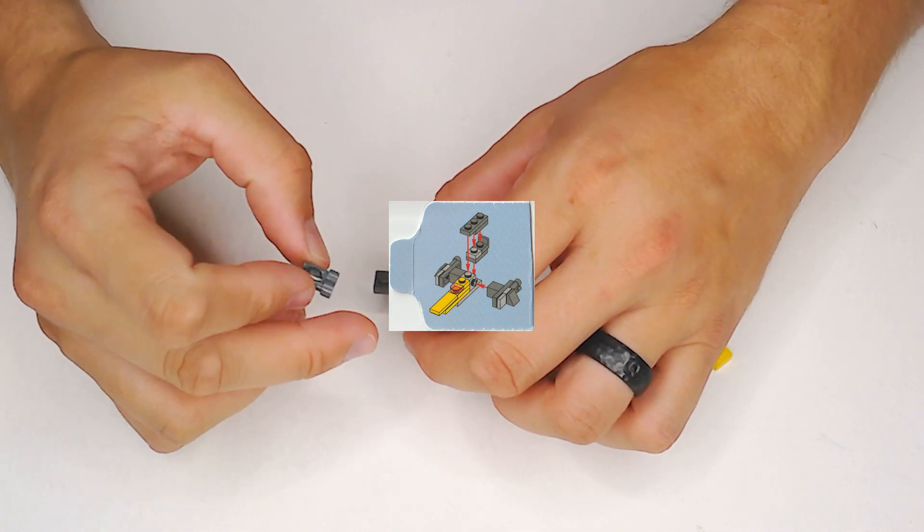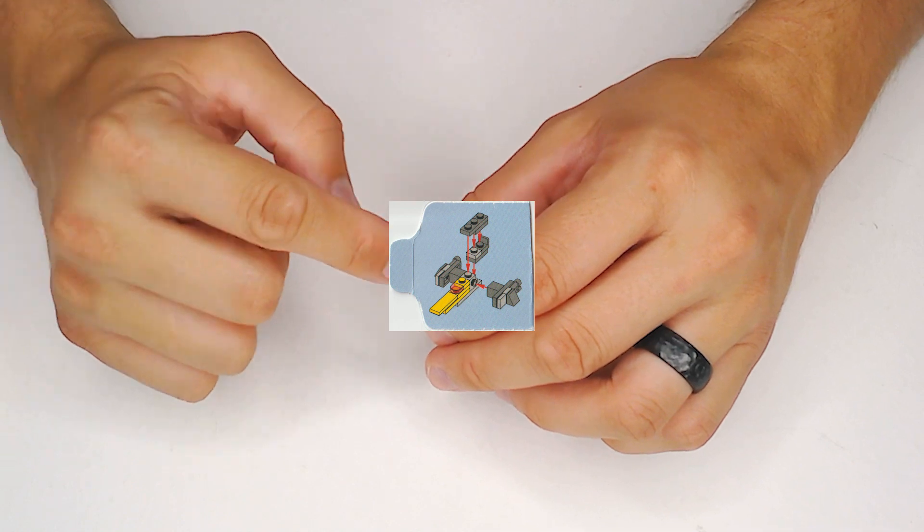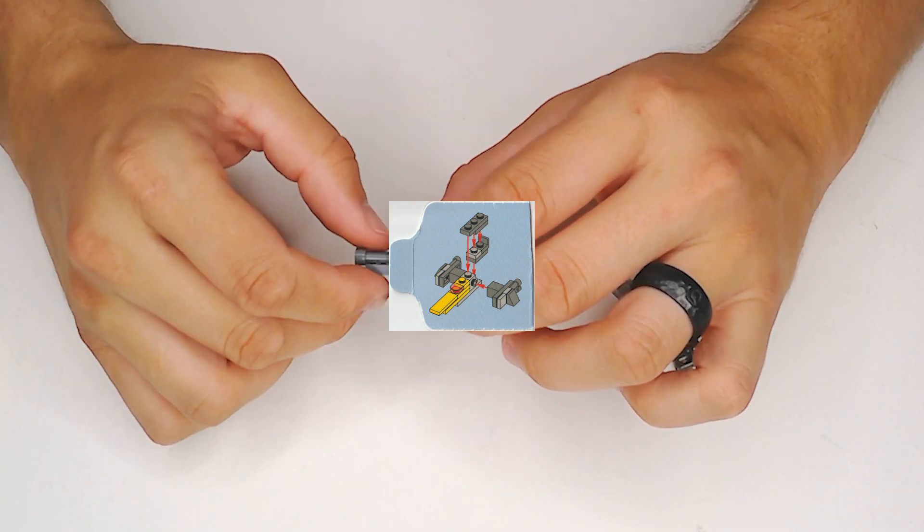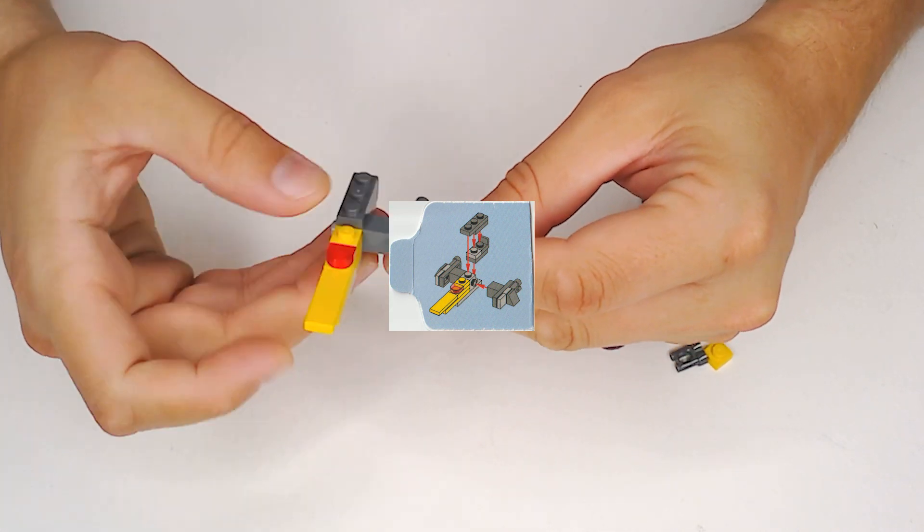We're going to take a little piece and put it on one side here, there's a little wedge shape piece. We're going to put it on the side.